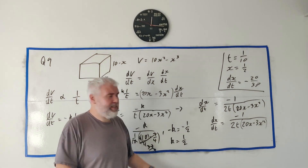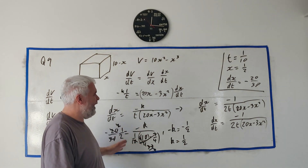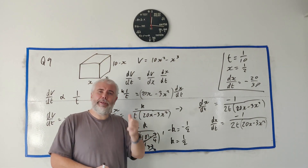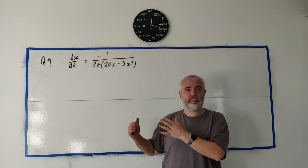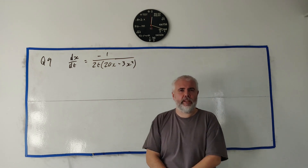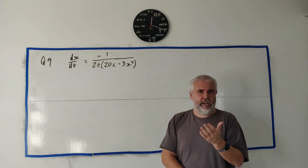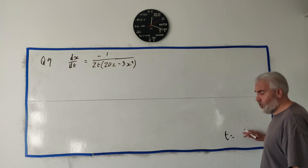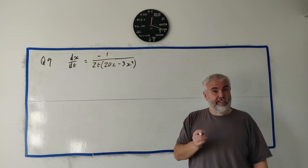That's how you answer part a. Now in part b they want us to solve this differential equation — the one they had us derive in part a. Ultimately they want an expression for t in terms of x.